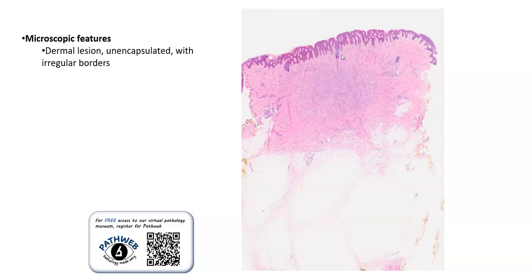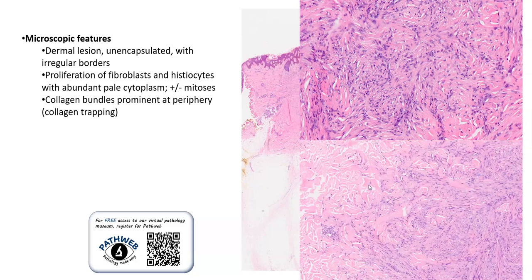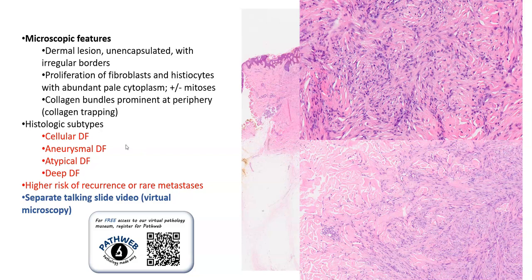Microscopically, as mentioned, this is a dermal lesion so it is unencapsulated and the borders are quite irregular. It is usually centered in the dermis and sometimes extends into the subcutis. What we see is a proliferation of spindled fibroblasts and sometimes also histiocytes, which can appear foamy, and there may occasionally be mitotic figures. Usually at the periphery of the lesion, we can see thick bundles of collagen entrapped between the lesional cells — this is called collagen trapping. There are several histologic subtypes, including cellular, aneurysmal, atypical, or deep dermatofibroma. These tend to carry a higher risk of recurrence or, very rarely, metastatic behaviour. There is a separate talking slide video demonstrating the virtual microscopic features, also found on PathWeb.